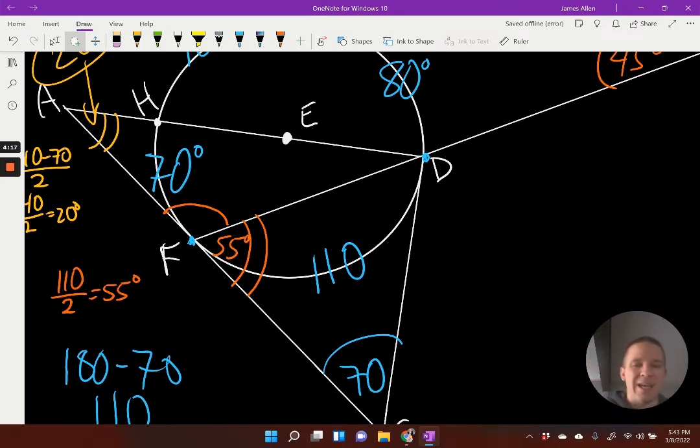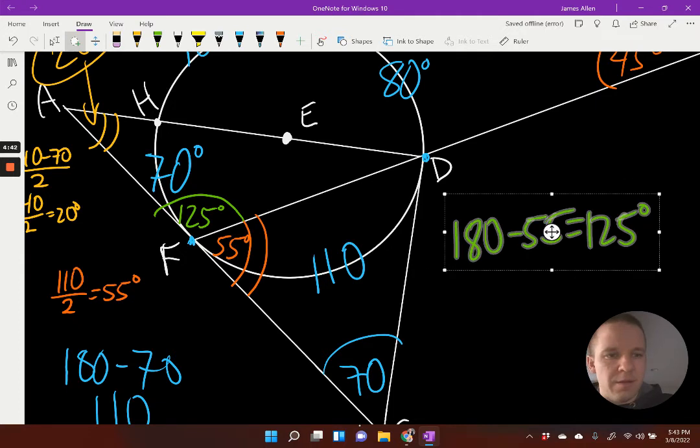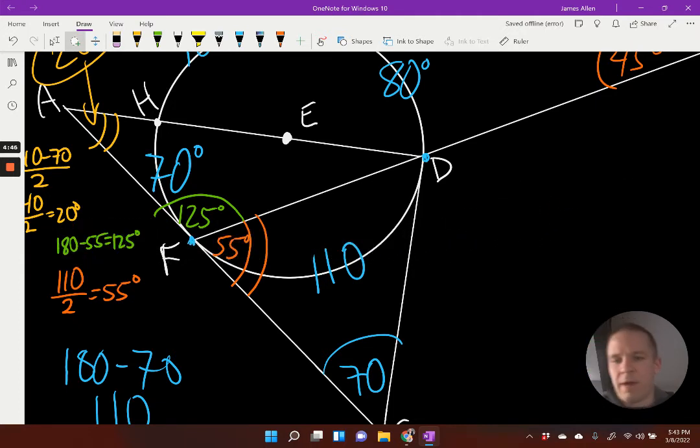And then how am I going to get the other angle? Those are supplements of each other, right? So 180, I need more colors here. We'll go with the light green here. So 180 minus 55, that's going to end up with 125. So 125 degrees. Work city over here. There we go.